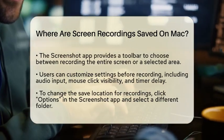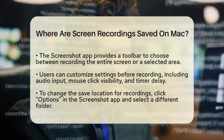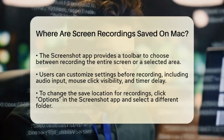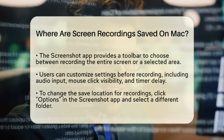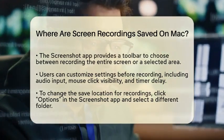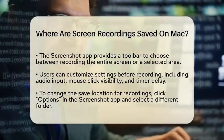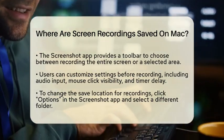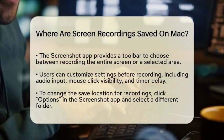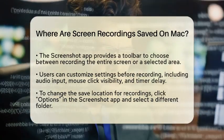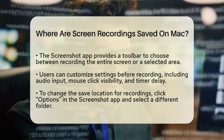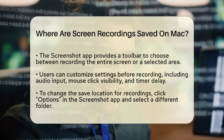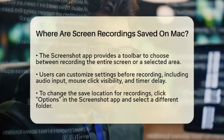Before you start, you can customize a few settings. For example, you can select a microphone for audio input, choose to show mouse clicks, and even set a timer delay. If you want to change where your recordings are saved, click on Options and pick a different folder under Save To.